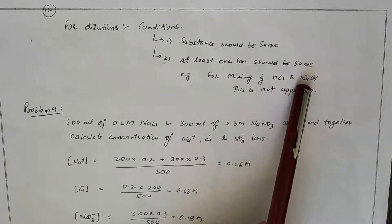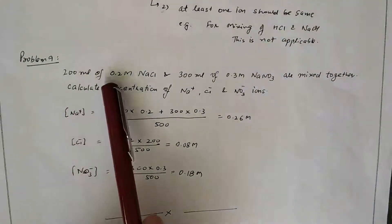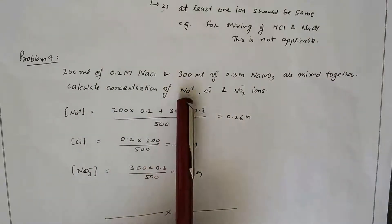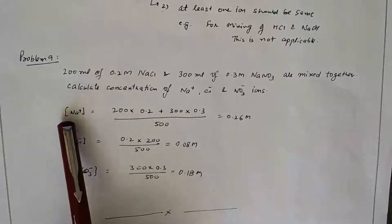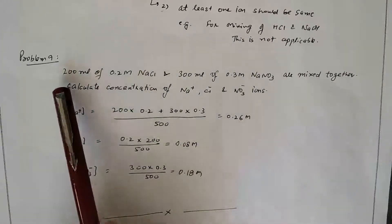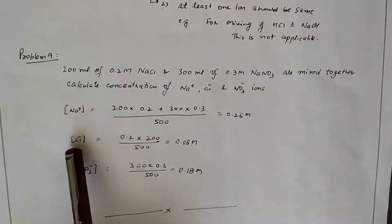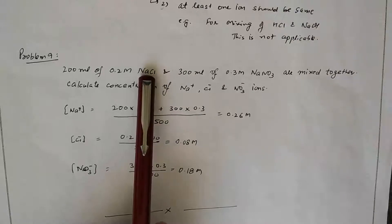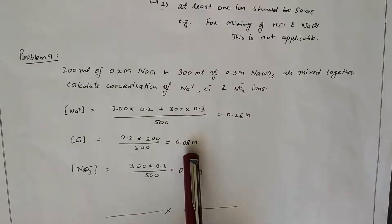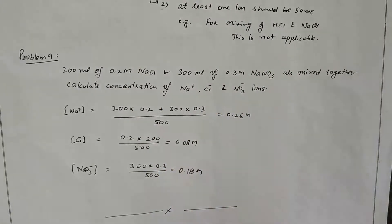Note: mixing HCl and NaOH is not valid for this formula because they react. Example problem: 200 mL of 0.2 M NaCl and 300 mL of 0.3 M NaNO3 are mixed. For sodium ion (present in both): concentration = (0.2×200 + 0.3×300) / 500. For chloride ion (only in NaCl): concentration = (0.2×200) / 500. For nitrate ion (only in NaNO3): concentration = (0.3×300) / 500.